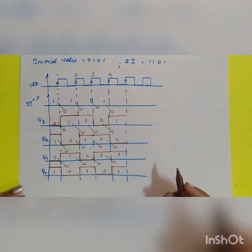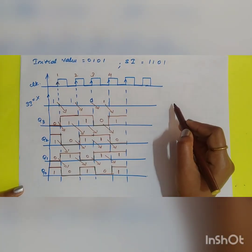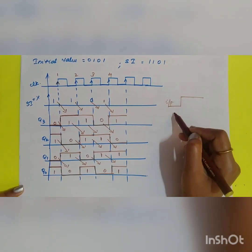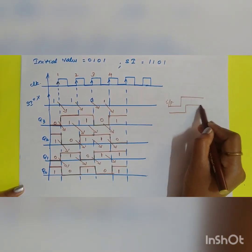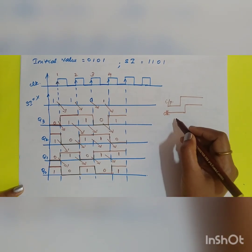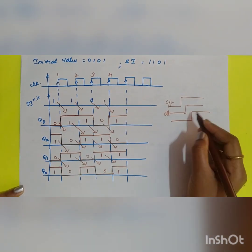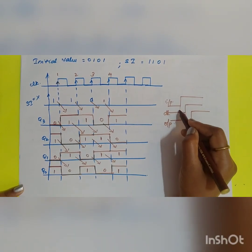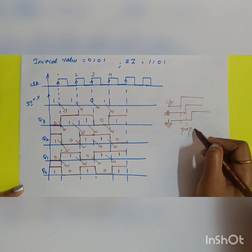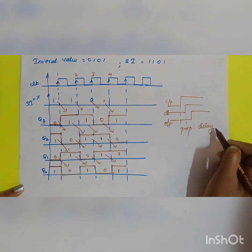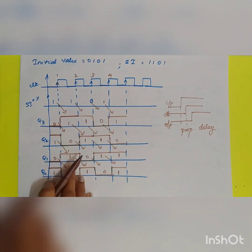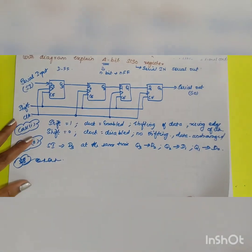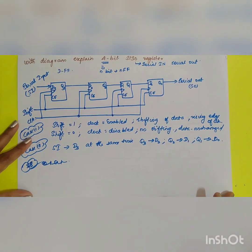This completes the timing diagram for the ideal case. In the practical case, due to propagation delay, if the clock signal is the reference, there will be a small delay and the output will appear slightly after the clock edge. This is the design of the 4-bit SISO register — including the circuit diagram and timing diagram.